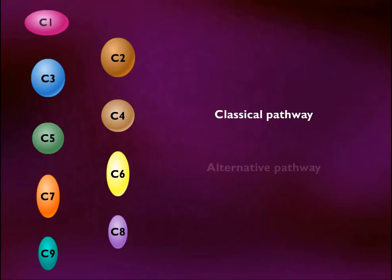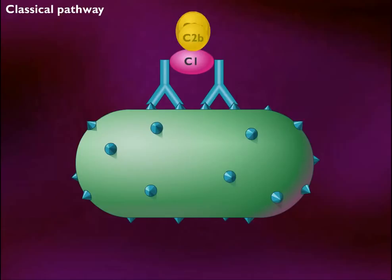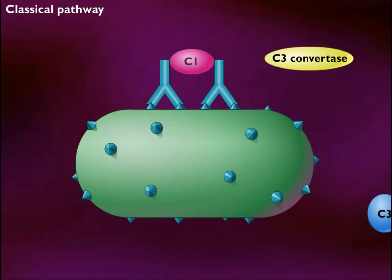In the classical pathway, C1 becomes activated when it binds to an antigen-antibody complex. The activated C1 then cleaves C2 into C2A and C2B, and C4 into C4A and C4B. C2B and C4B combine to form a protease called C3-convertase, which then cleaves C3 into C3A and C3B.